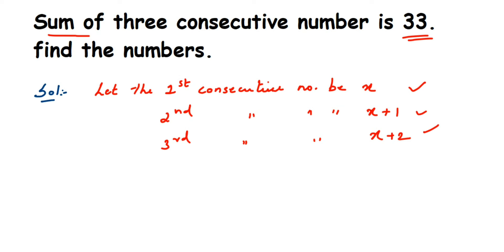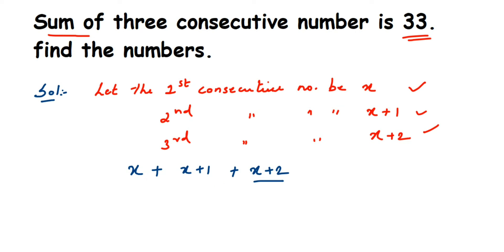Adding the three consecutive numbers: x plus (x plus 1) plus (x plus 2) equals 33. This is our linear equation. Adding the variables we get 3x, and adding the constants 1 plus 2 gives 3. So the equation becomes 3x plus 3 equals 33. Now we need to find the value of x, so we transpose the constants to one side.